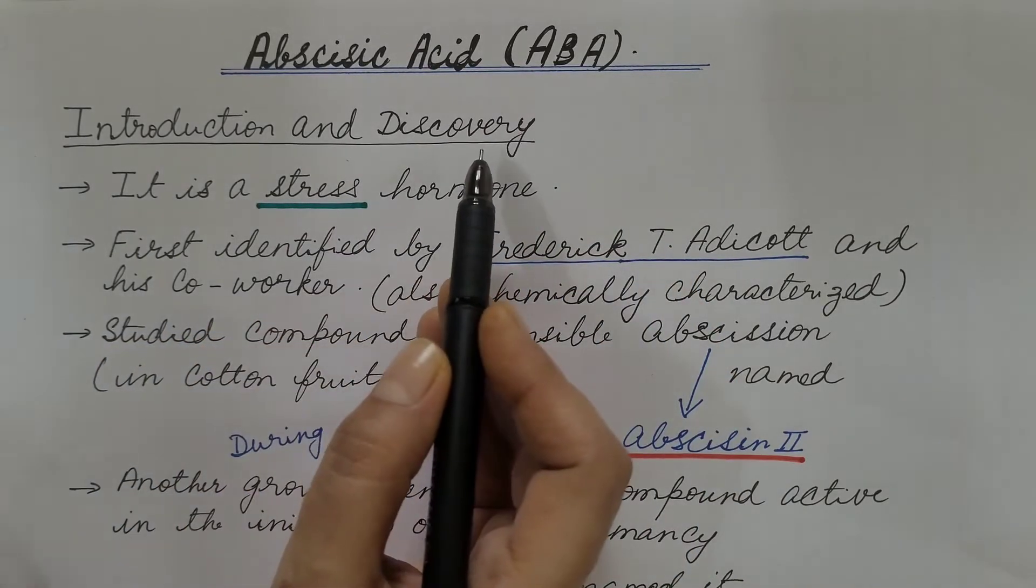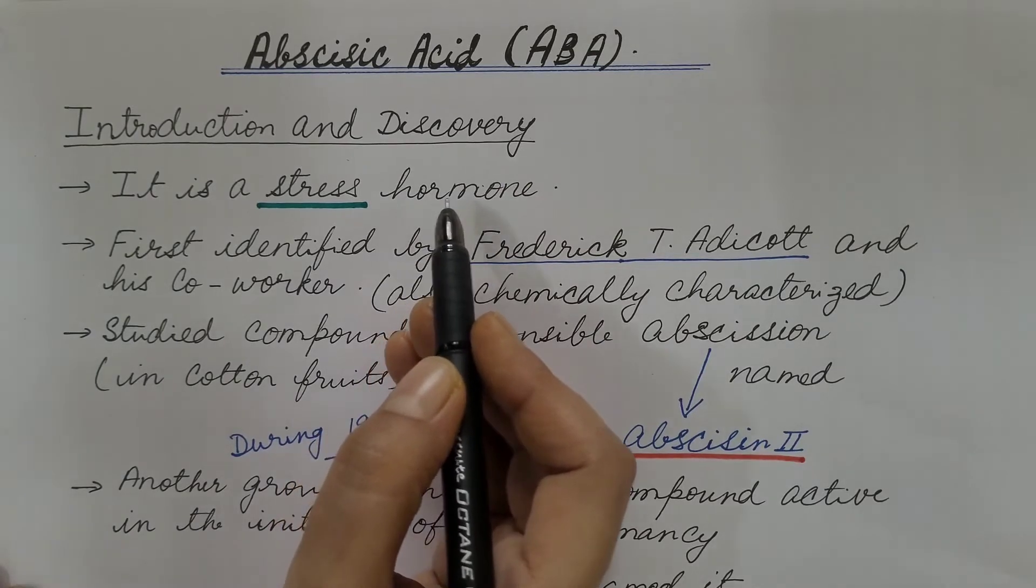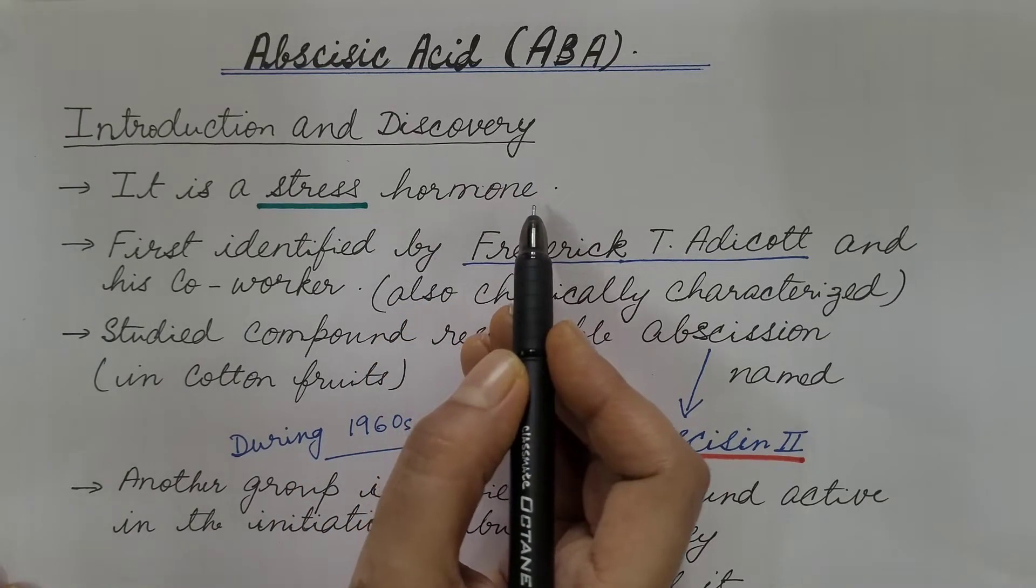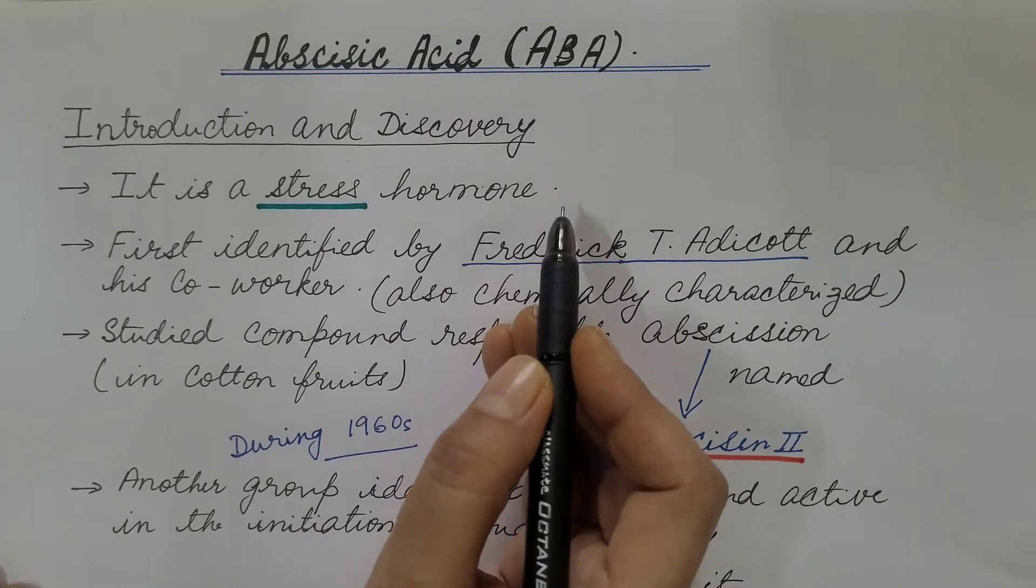It is a stress hormone. It helps plants to survive during unfavorable conditions of the environment, like deficiency of water, high temperature, and other unfavorable environmental conditions.